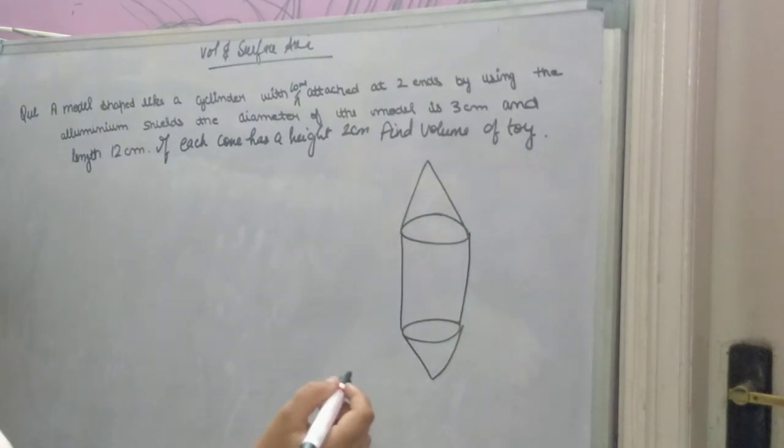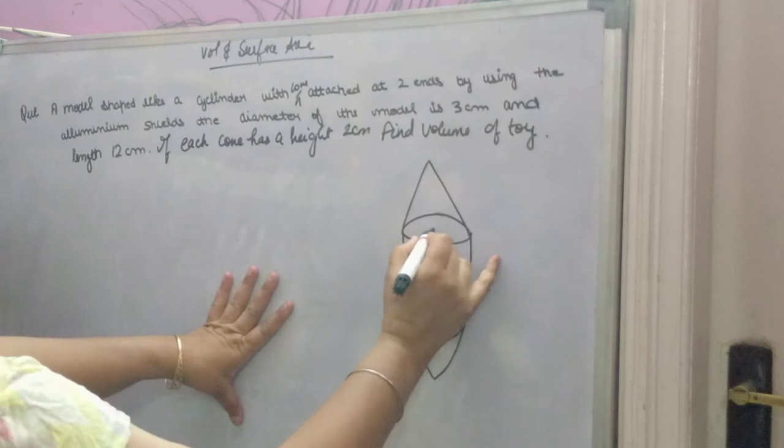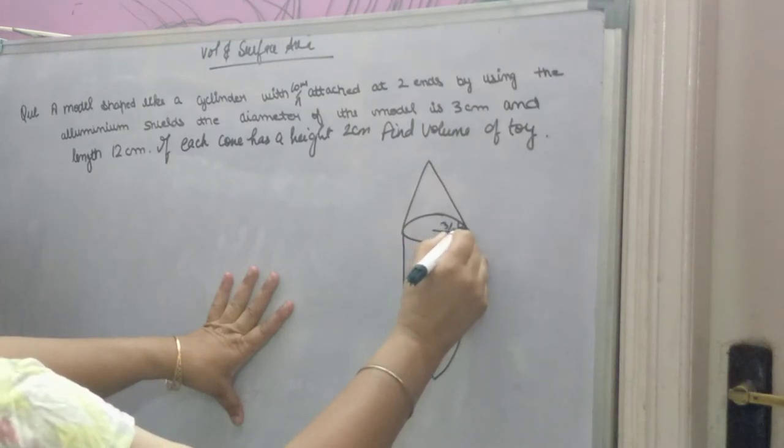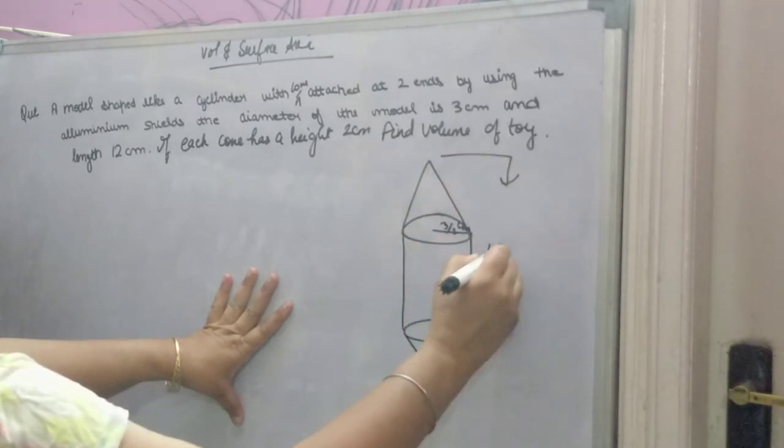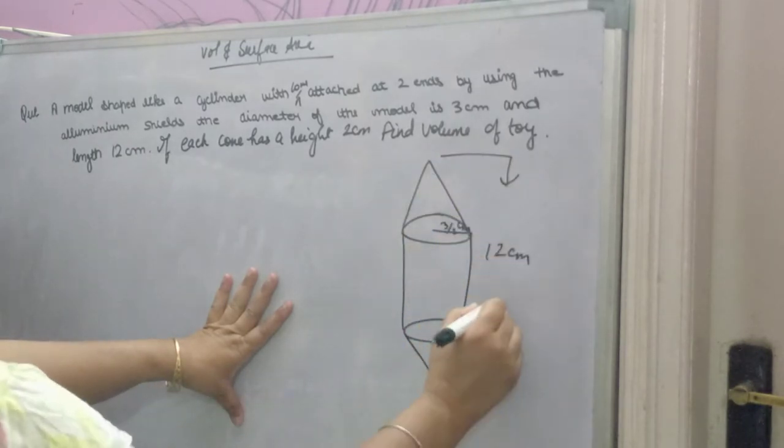By using the aluminum sheet, the diameter of the model is 3 cm, so the radius will be 3 by 2 cm. The total length is given as 12 cm.